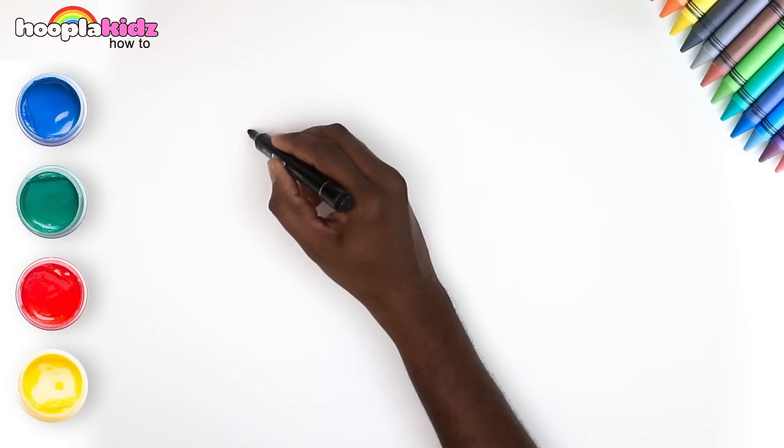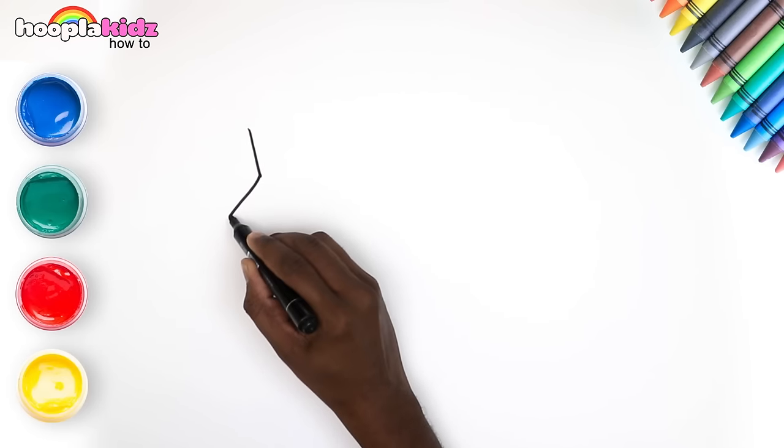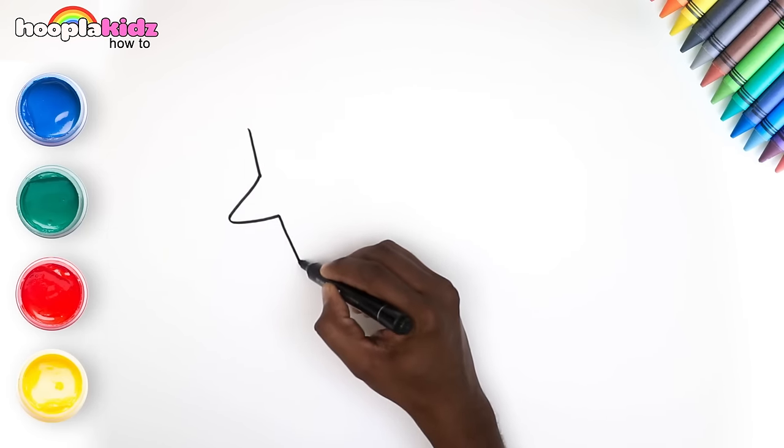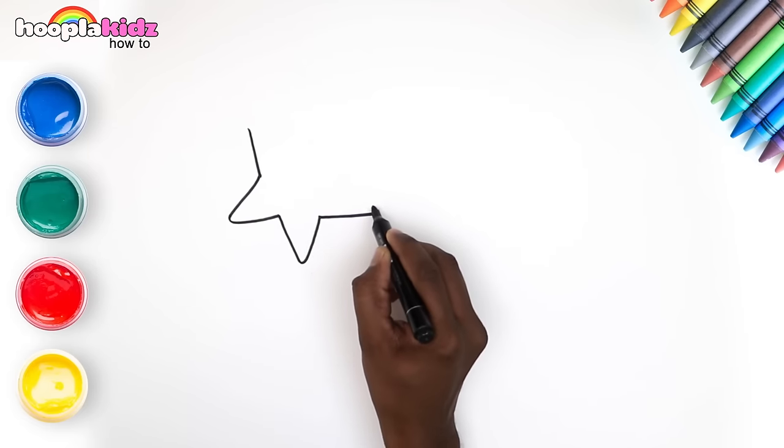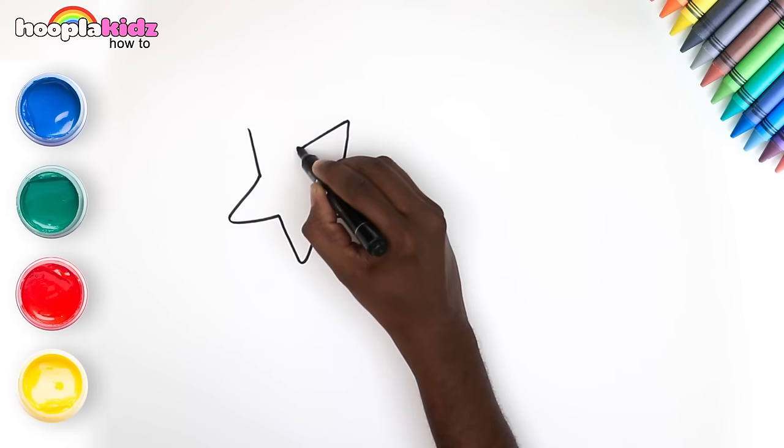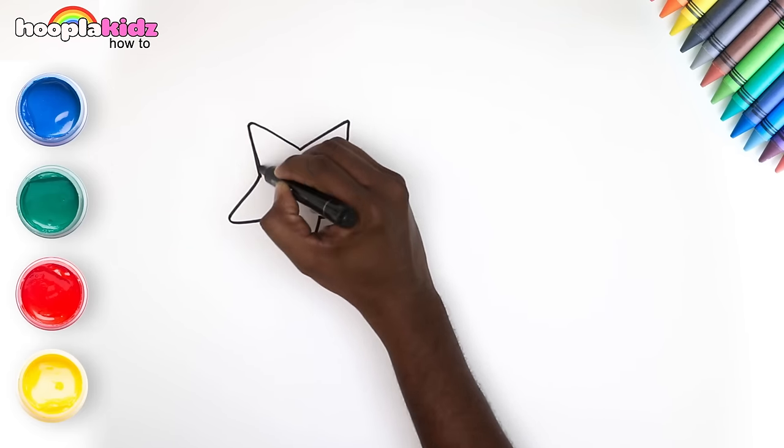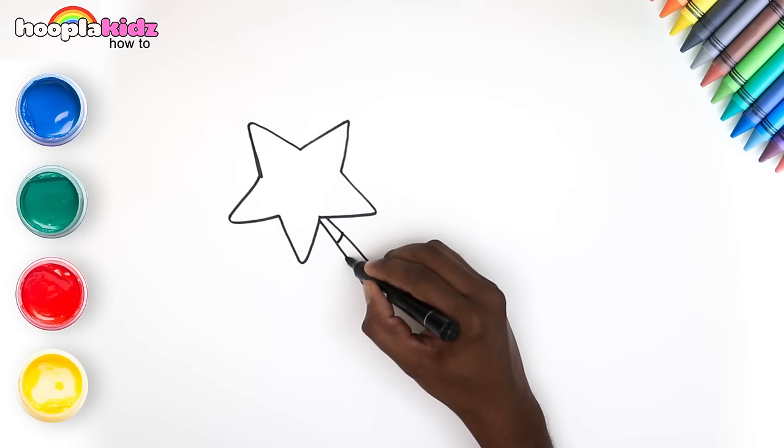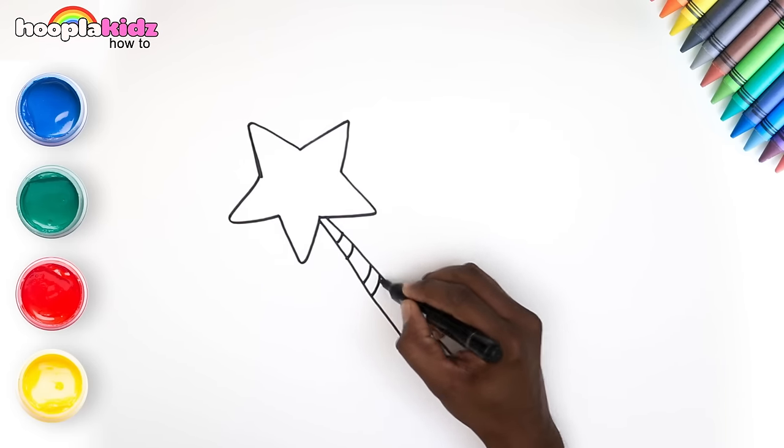Hey friends! Today we're going to draw a magic wand. First, we're going to make a big star. It's easy to make with upside down Vs. There you go! Then we're going to draw the stick. That's good! Keep going!